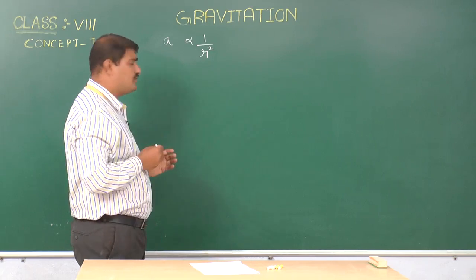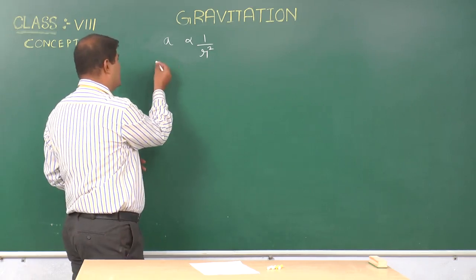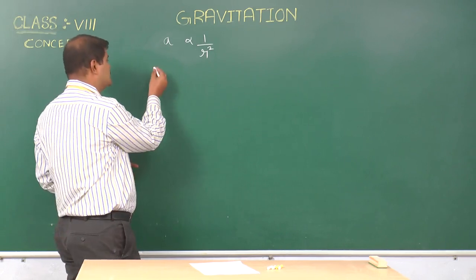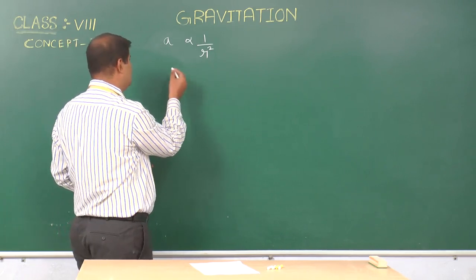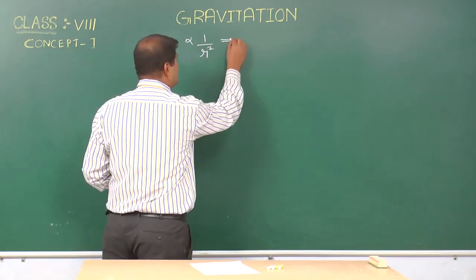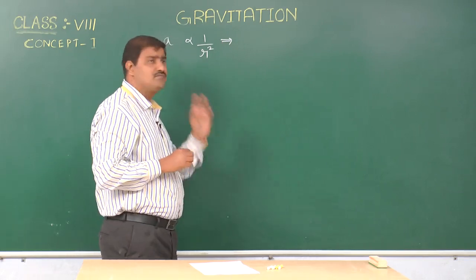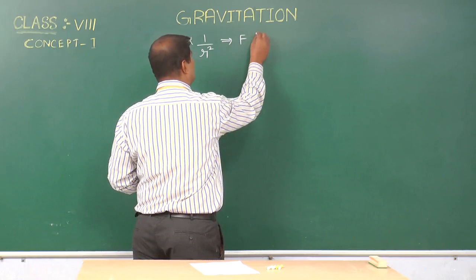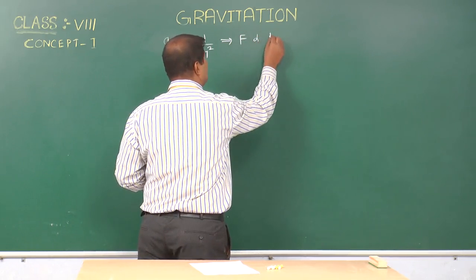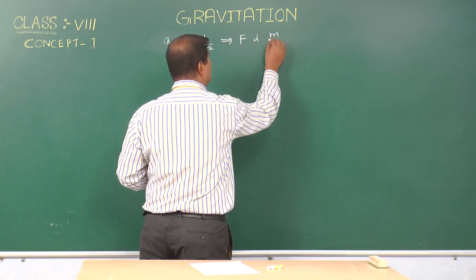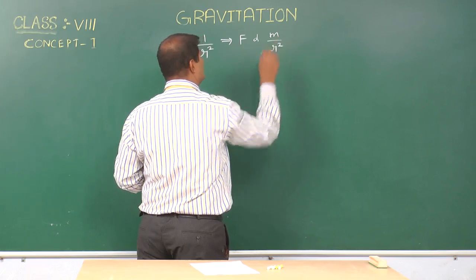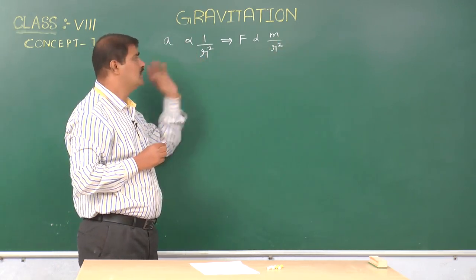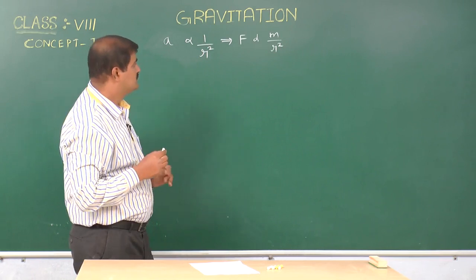As we know, the force is mass times acceleration. If we assume M is the mass of the moon, we can write F is directly proportional to M by R square, where M is the mass of the moon.